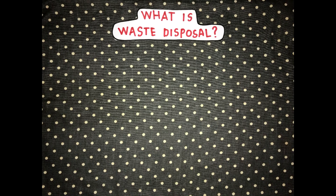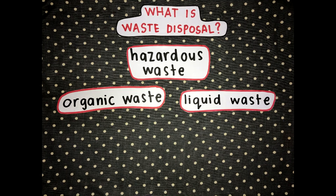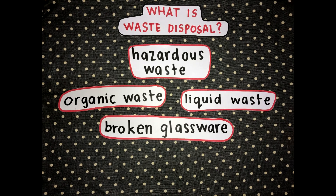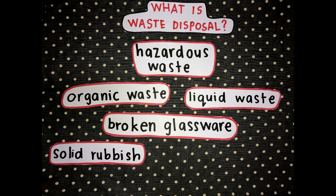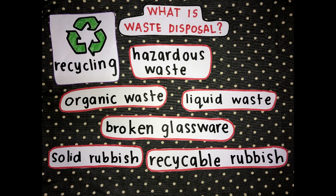What is waste disposal? It is the process of getting rid of unwanted material or substances. For example: hazardous waste, organic waste, liquid waste, broken glassware, solid rubbish, and recyclable rubbish. Waste disposal also includes recycling and open burning.